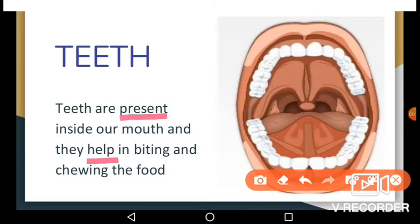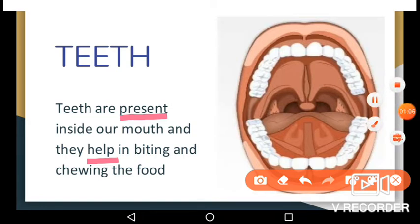Unlike pythons, humans cannot swallow food in one big gulp. Food must be broken down into smaller pieces before it can be swallowed. This function is performed by teeth. Teeth are present inside our mouth and they help us in biting and chewing the food.